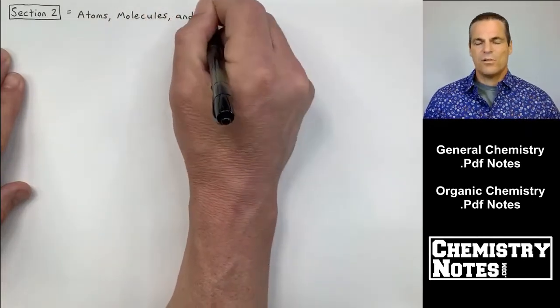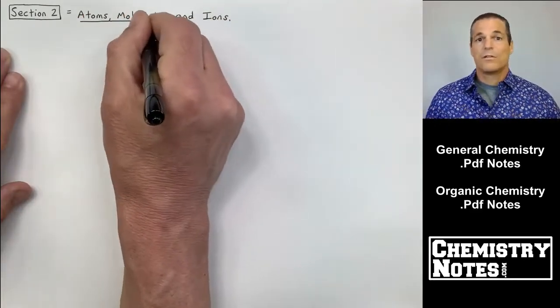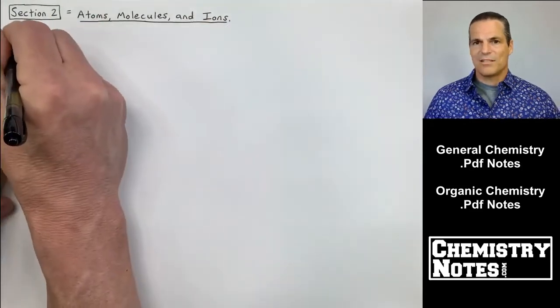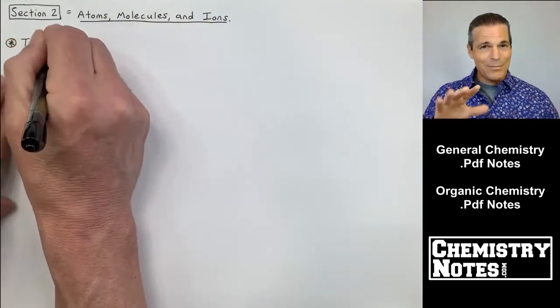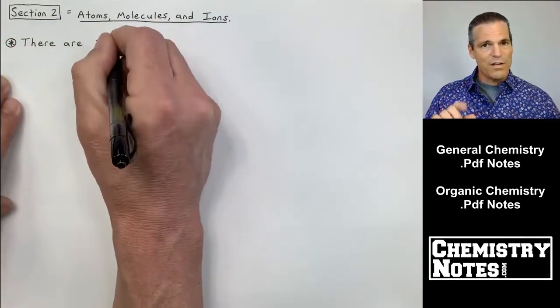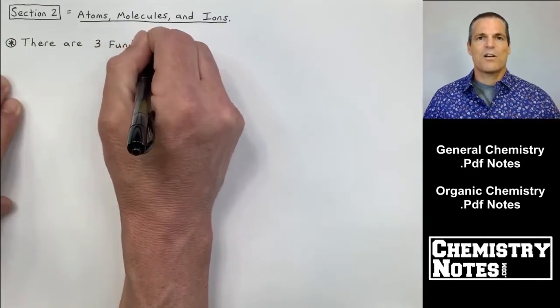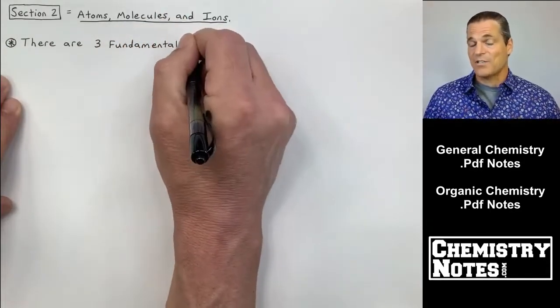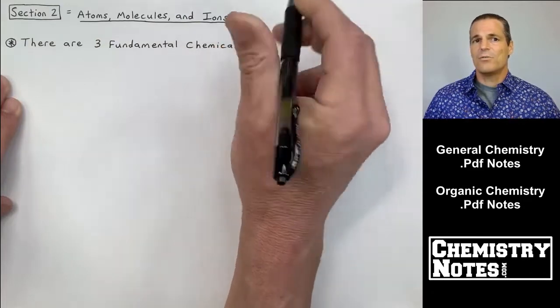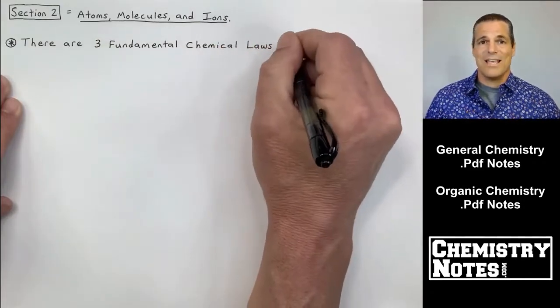So section two is kind of like chapter two. The reason I don't name them chapters is because everyone's chapters are a little bit different. Not much, very close. But just to be safe, instead of chapters I call them sections. So this is section two: atoms, molecules, and ions.